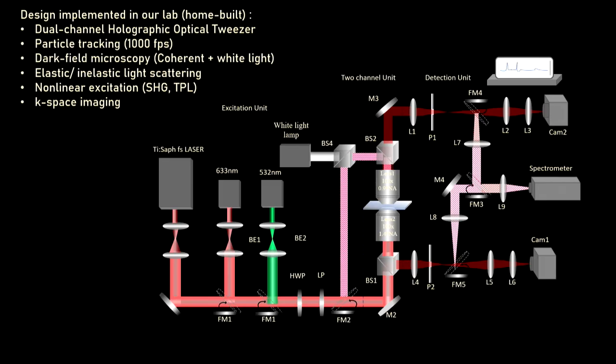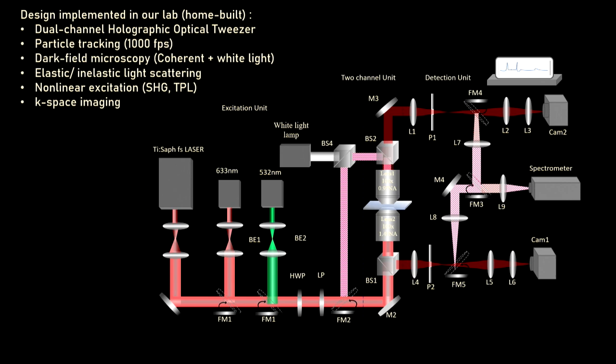We generate such beams and experiment with them. For l equal to 3 index colloids, passive colloids show rotation through momentum transfer — this is an optical transfer of momentum. When a thermally active colloid joins a passive one in the optical vortex, they come close and go away, forming very interesting and non-trivial dynamics with some nonlinear dynamics involved. We are still working to understand the full mechanism.